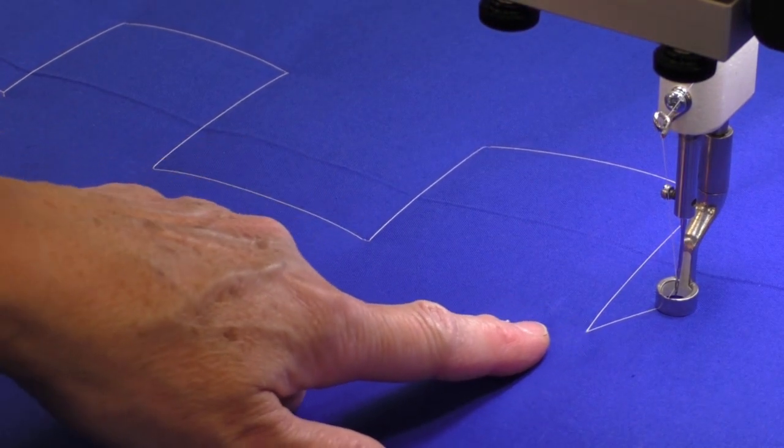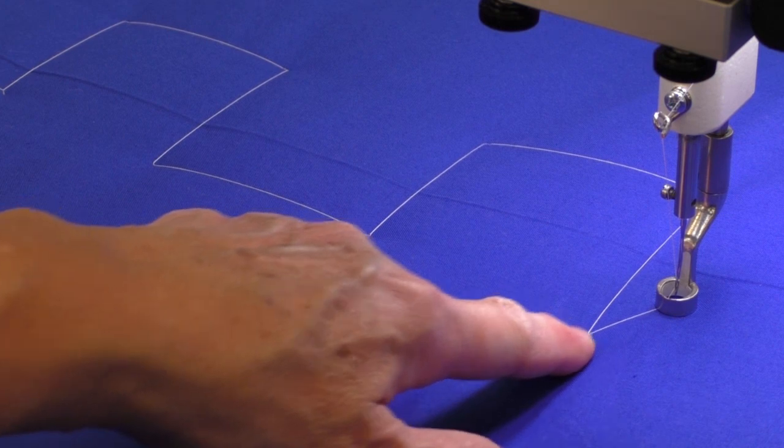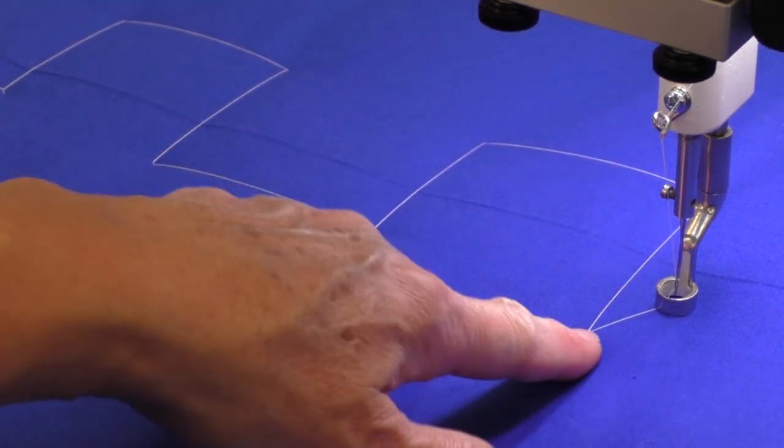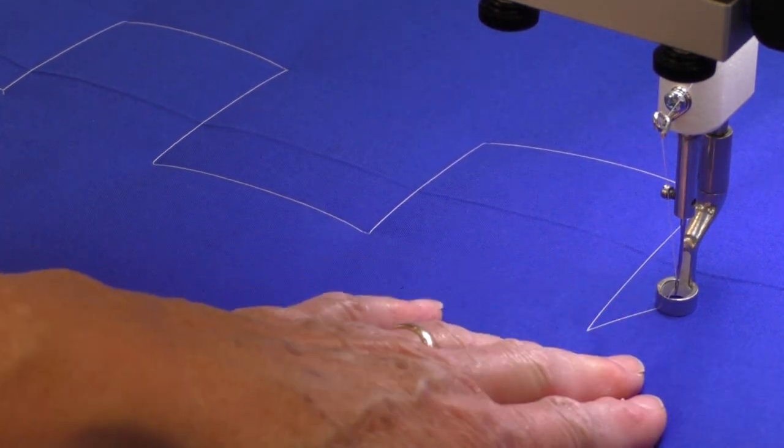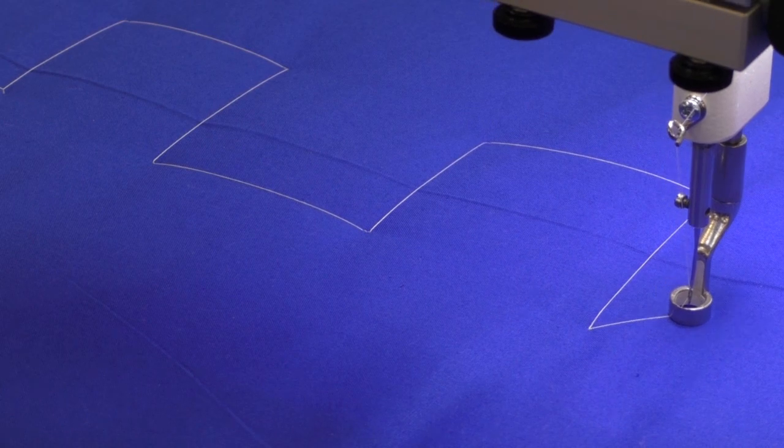By allowing the machine to do that quick three or four stitch position right here at each of those corners, it's much faster and I can cruise right on down the quilt.